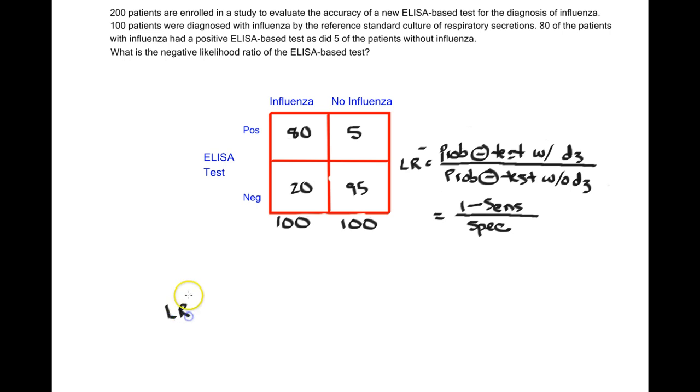So let's plug in some numbers. So likelihood ratio, negative. In the numerator, we have the probability of a negative test in patients with disease. We have 100 total patients who had influenza, and 20 of them had a negative ELISA-based test. In the denominator, we have the probability of a negative test in patients without disease. We have 100 total people without influenza, and 95 of them had a negative test, so we'll put 95 right here. And then when we make the calculations, the 20 divided by 100 will be 0.2, and 95 divided by 100 will be 0.95. And when you make the calculation, it comes out to 0.21. So the negative likelihood ratio of this ELISA-based test is 0.21.